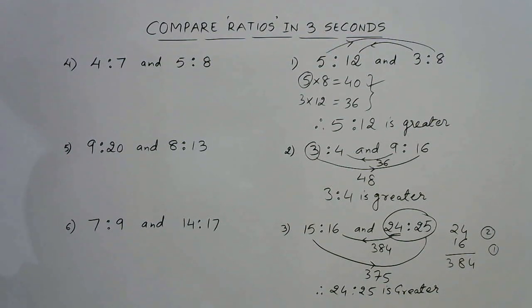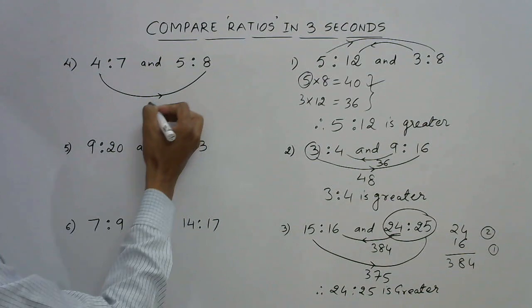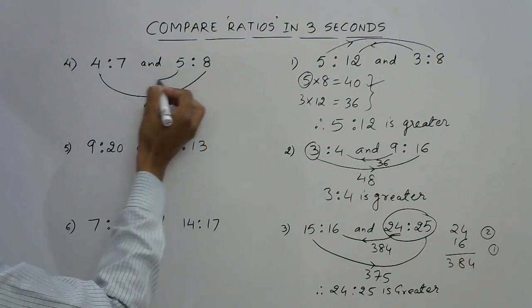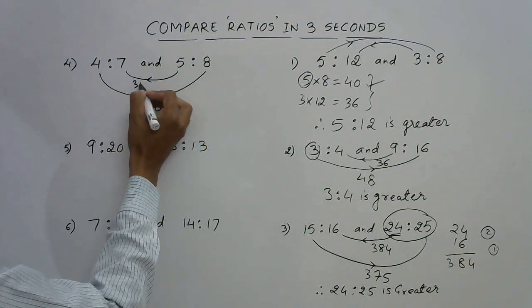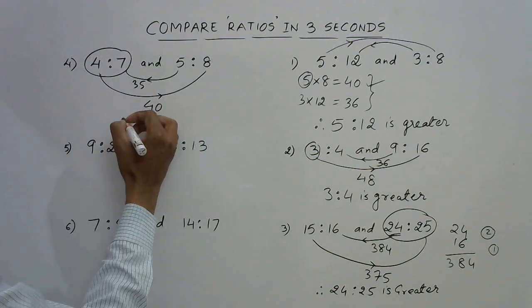Let's see this one: 4 ratio 7 and 5 ratio 8. Multiply these two, you get 40. Multiply these two, you get 35. So 40 is greater, therefore 4 ratio 7 is greater.